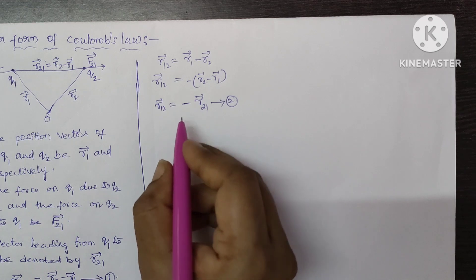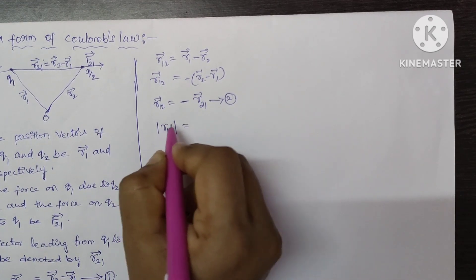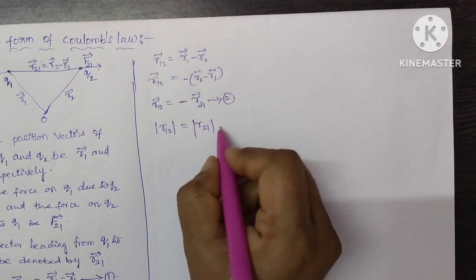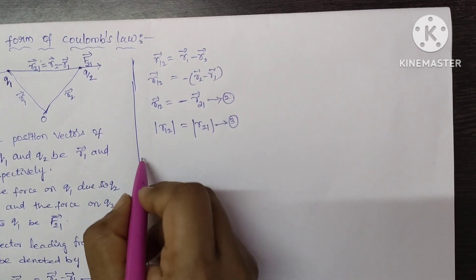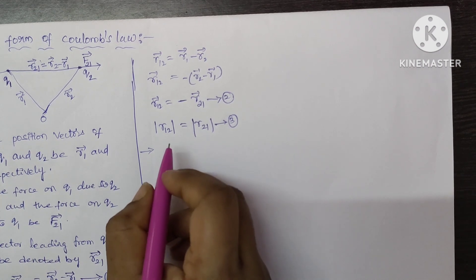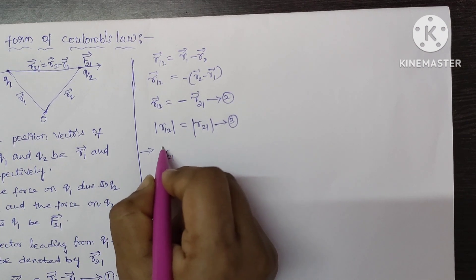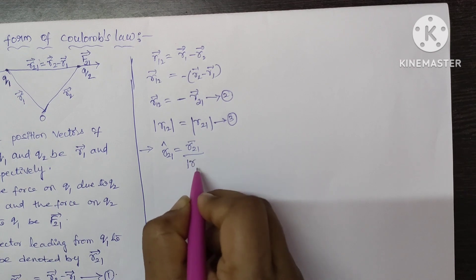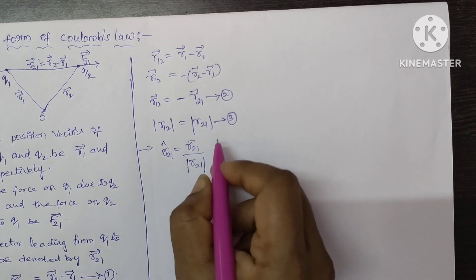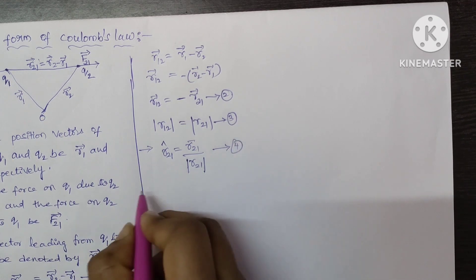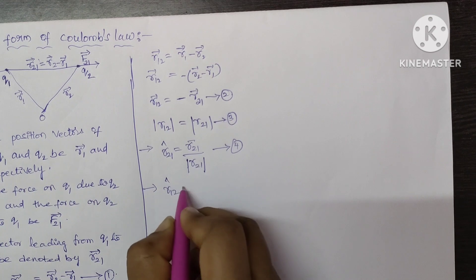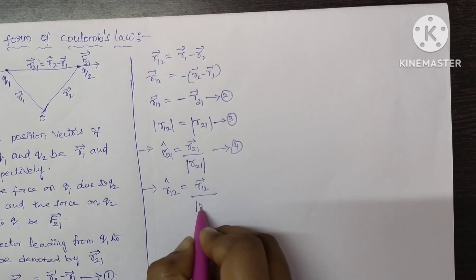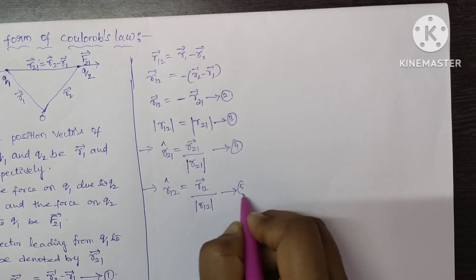Here the directions are different but the magnitudes are equal: magnitude of R12 bar is equal to magnitude of R21. Let it be equation number 3. The directions of these vectors can be specified by using unit vectors. From the definition of unit vector, R21-cap is equal to R21 bar divided by its magnitude — let it be equation number 4. And R12-cap is equal to R12 bar divided by its magnitude — let it be equation number 5.